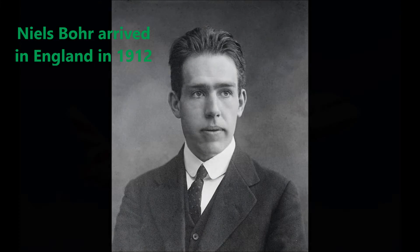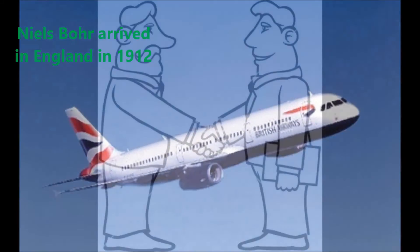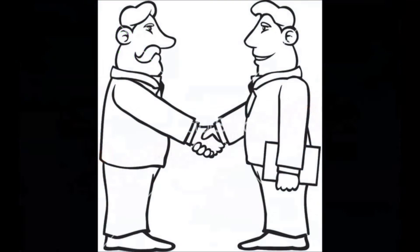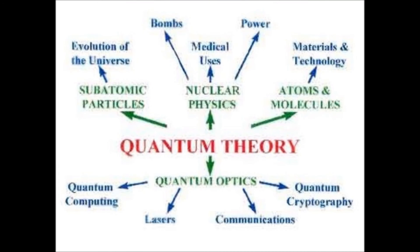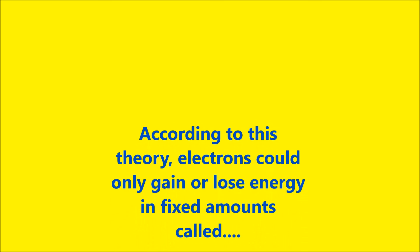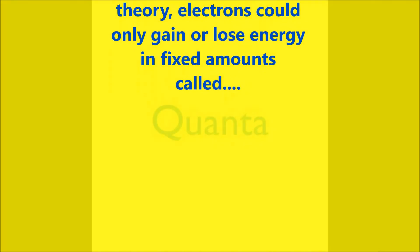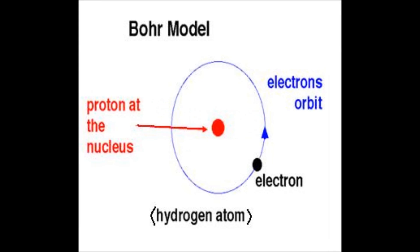In 1912, the Danish physicist Niels Bohr arrived in England to work with Rutherford and applied the quantum theory to the model. According to this theory, electrons could only gain or lose energy in fixed amounts called quanta. So long as an electron did not change its orbit, it would never collapse into the nucleus.